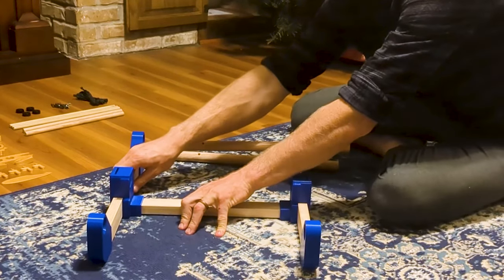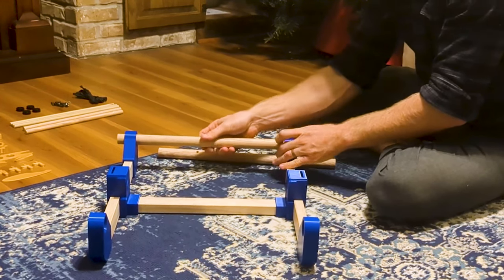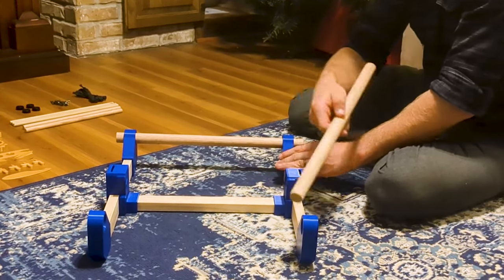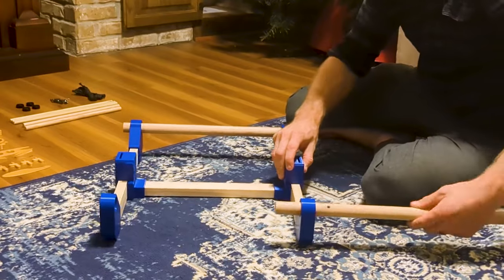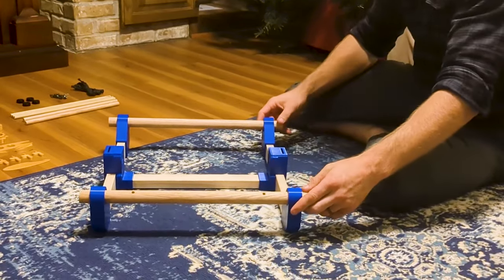We'll just slide it until it does, and then press it through both. And the same thing with the other end. And that is the basic frame of the table loom completed.